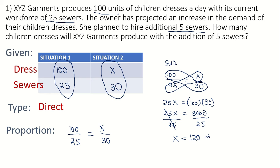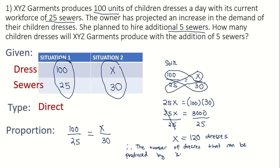So what is this 120? It represents 120 dresses. Therefore, the number of dresses that can be produced by 30 sewers is 120. That is our final answer for direct proportion. Now let's proceed to problem number two.